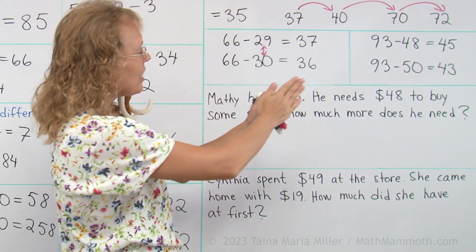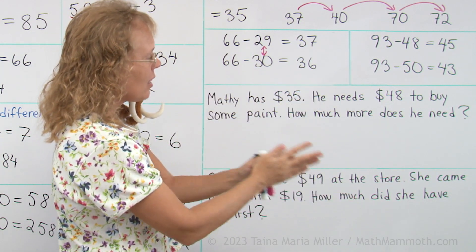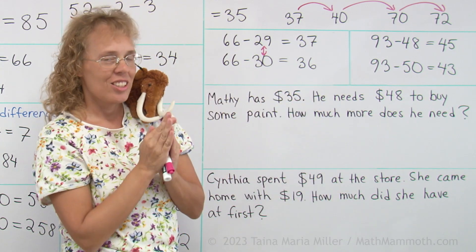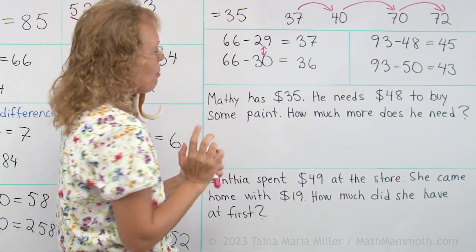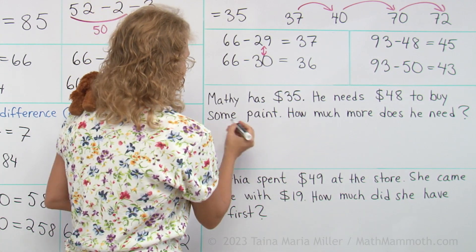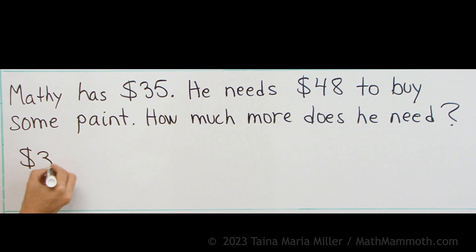So he has $35, he needs $48. We could write an addition or subtraction. Now I'm going to write an addition thinking that Matthew has $35, then he needs some more, so he wants to add some more money to his pocketbook, right, so that he would get $48.